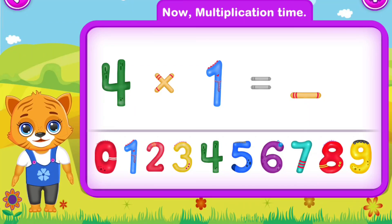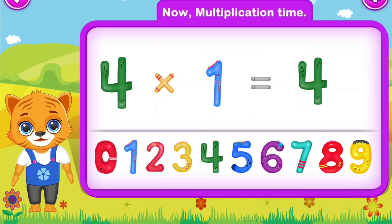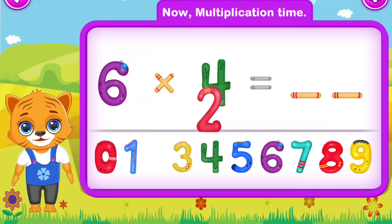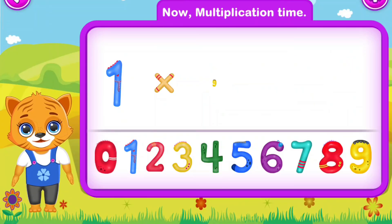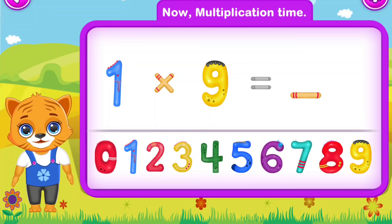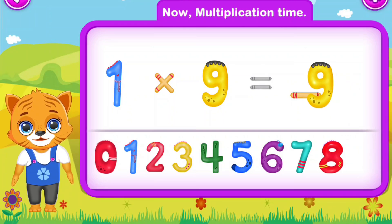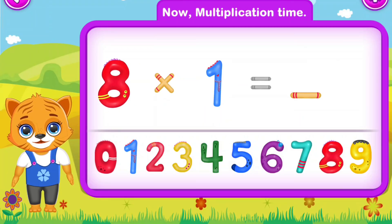Four multiply by one is equal to four. Perfect! Six multiply by four is equal to twenty-four. Awesome! One multiply by nine is equal to nine. You did a great job! Eight multiply by one is equal to...